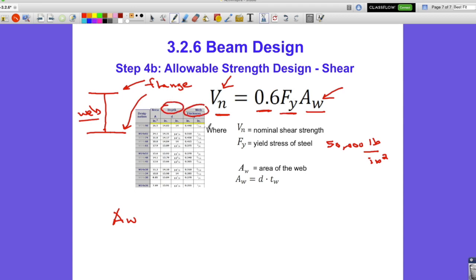They tell you right in the table web thickness and depth, and those are what we're going to need. We're working this backwards to determine the area of the web that we need. That's just going to be the nominal shear that we determined in the previous step, 13,500 pounds, divided by these two terms: 0.6 times 50,000 pounds per square inch.